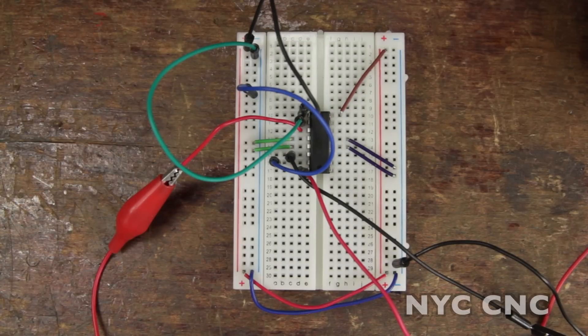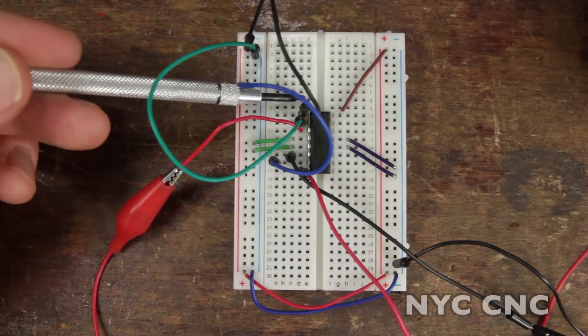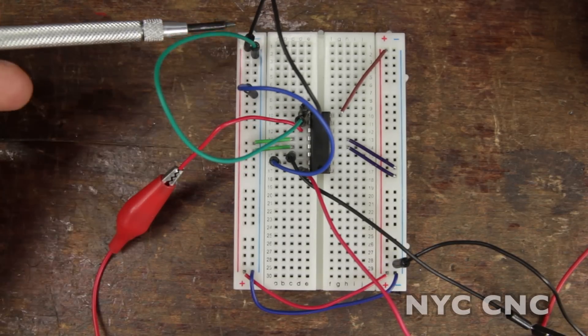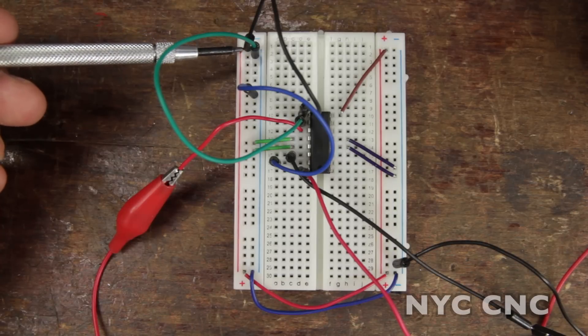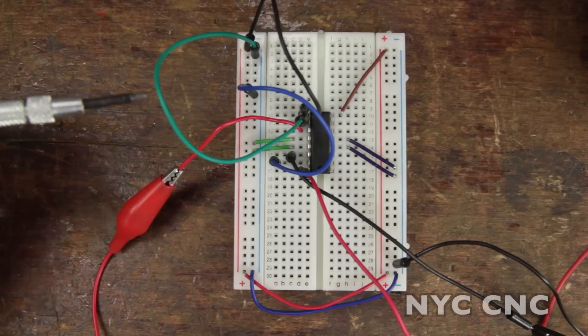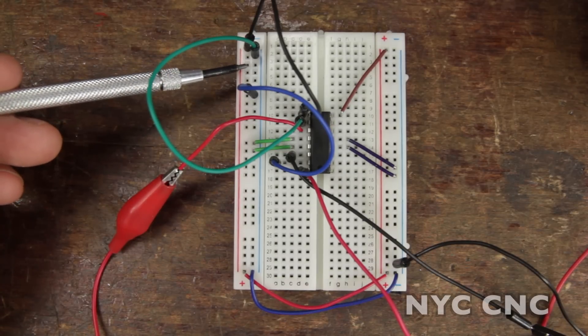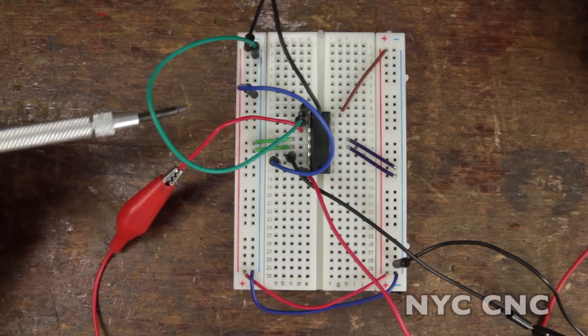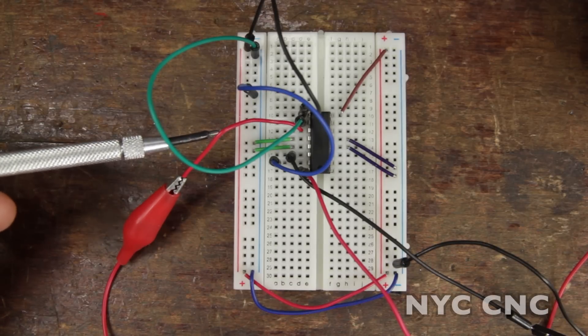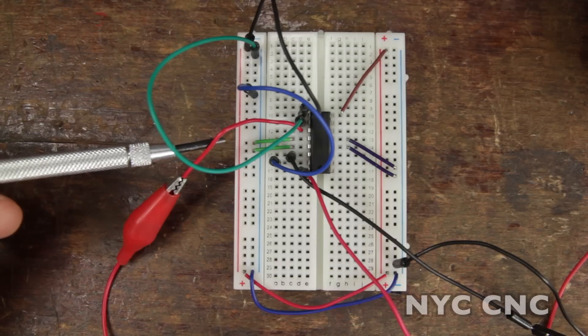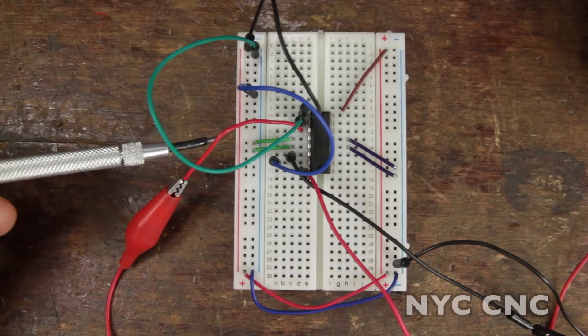The pin layout for the H-bridge is as follows. Pin number one is this black jumper wire, when it's connected to positive five volts that enables the motor. Pin number two is this green jumper wire, when it goes from ground to positive five volts that enables the motor to turn in one direction. The next pin is pin three, that's the red jumper wire that connects directly to one of the motor terminals.